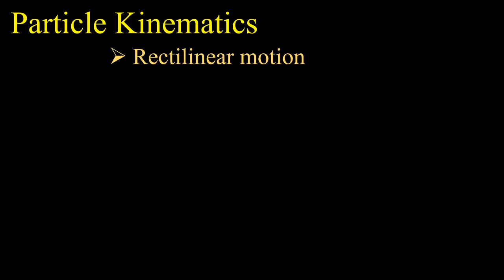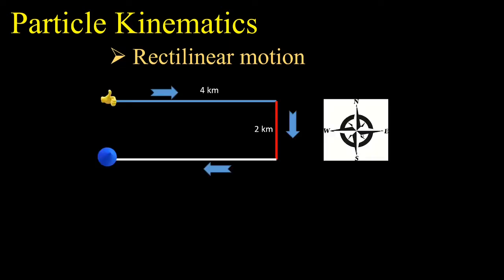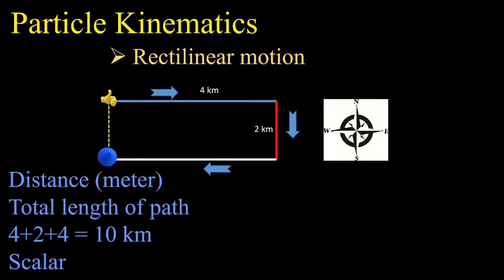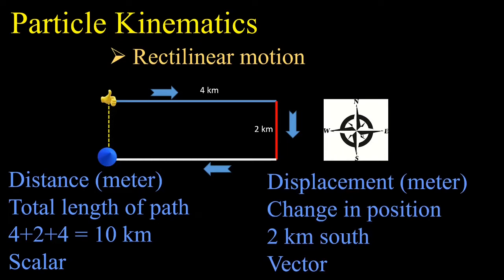The simplest motion possible is rectilinear motion — for example, an apple falling from a tree or a car moving in a straight line. If someone asks where your house is, you could say it is 10 kilometers away (distance — a scalar quantity) or 2 kilometers towards south (displacement — the shortest distance between initial and final position, with direction). Distance can never be negative, whereas displacement can be negative, positive, or zero.